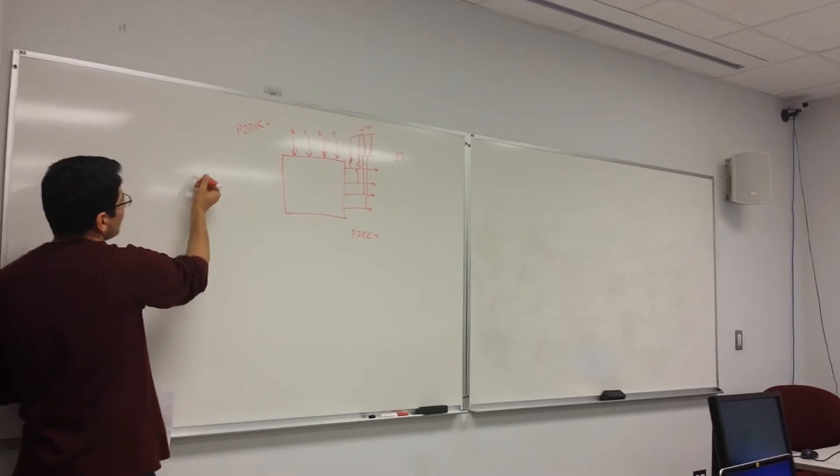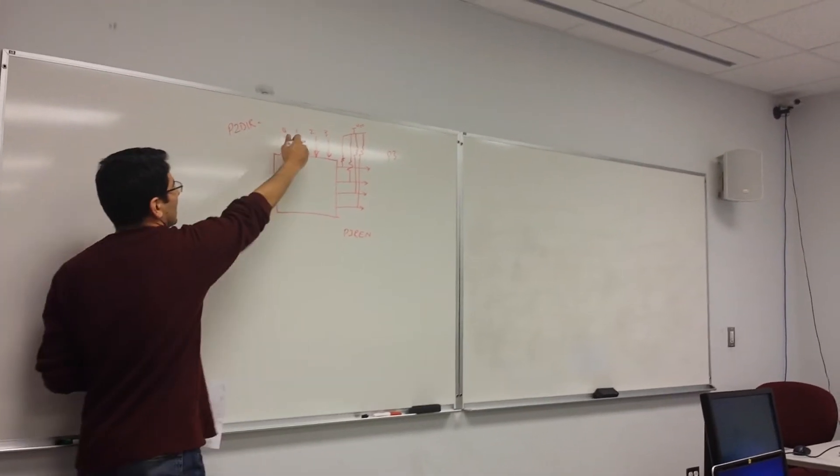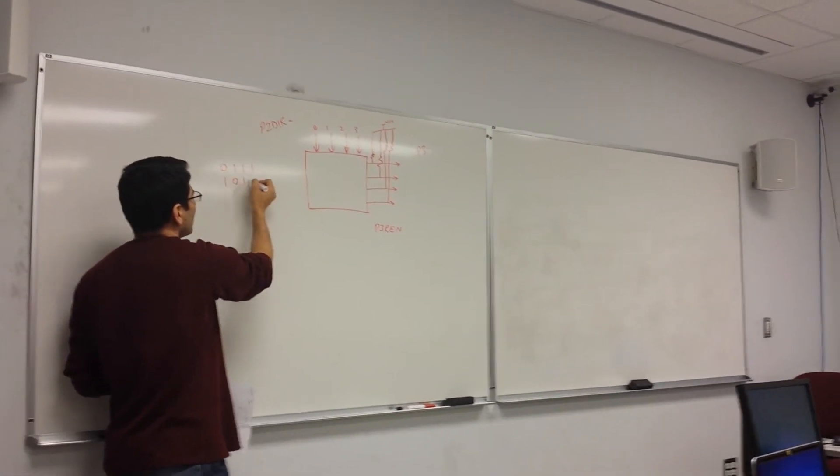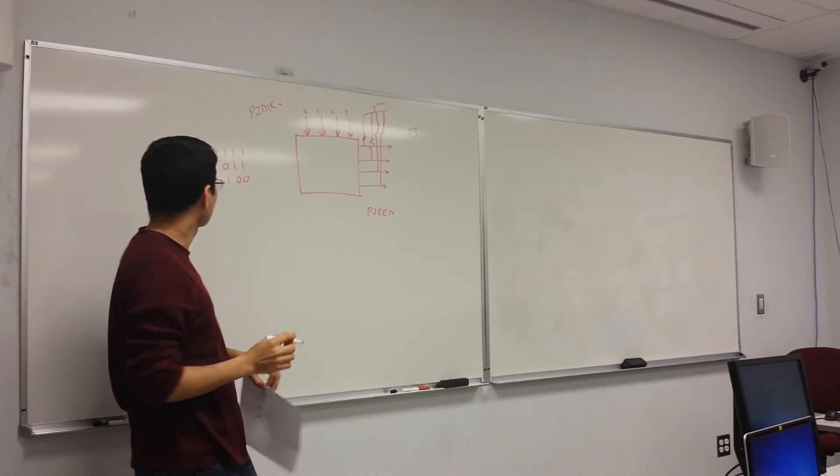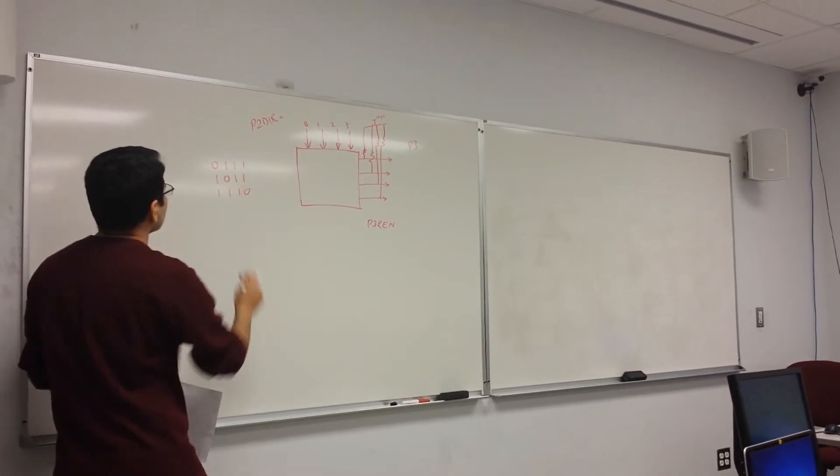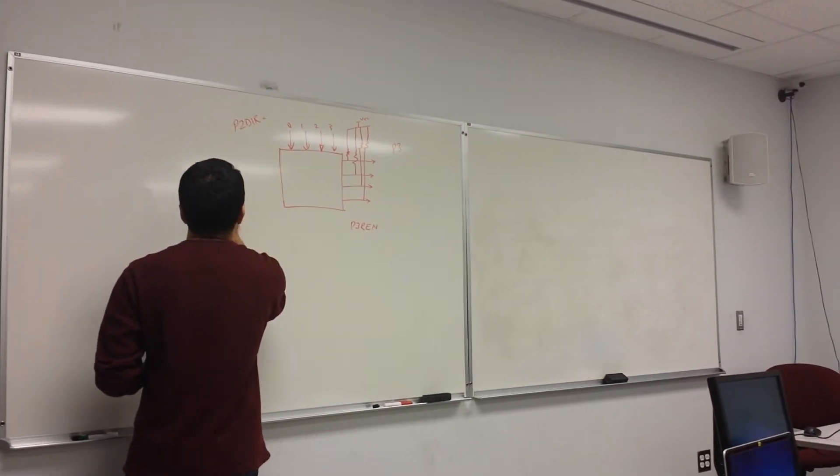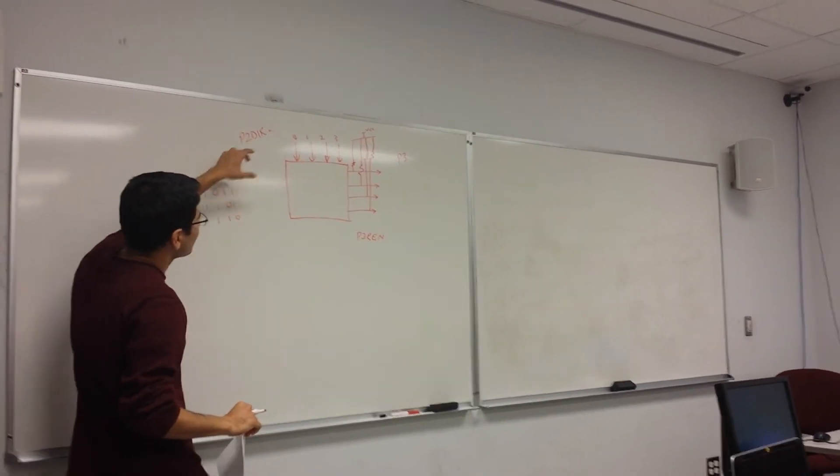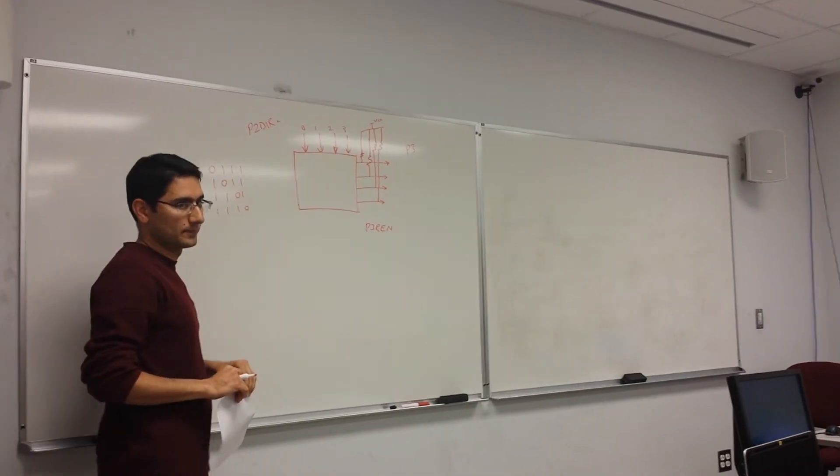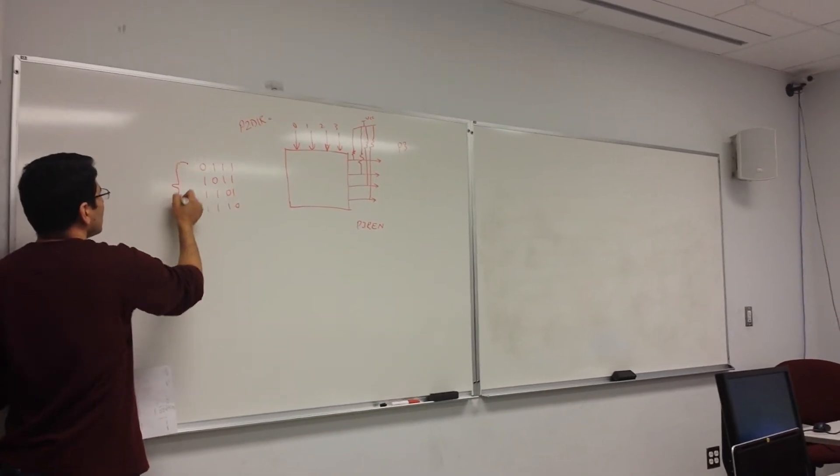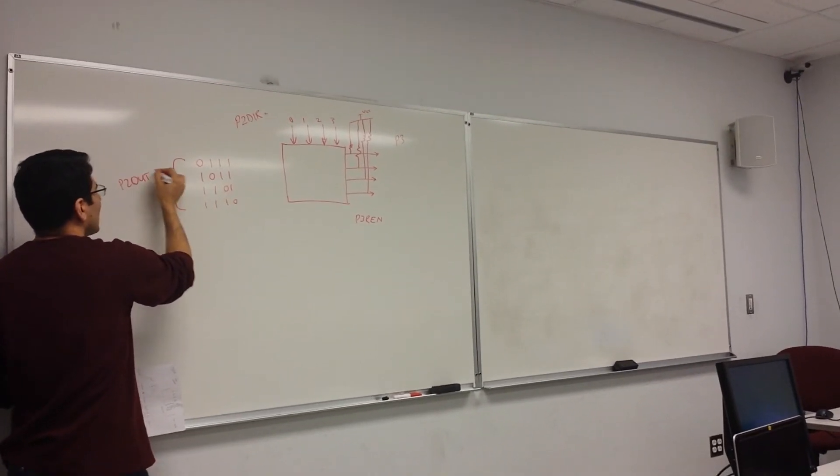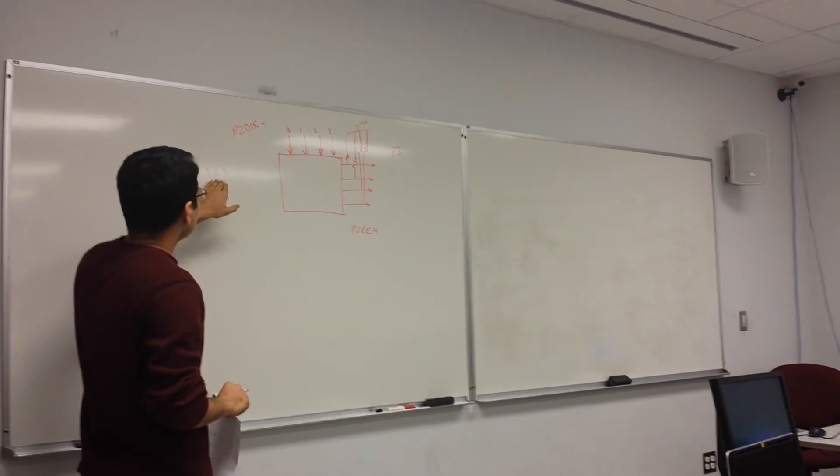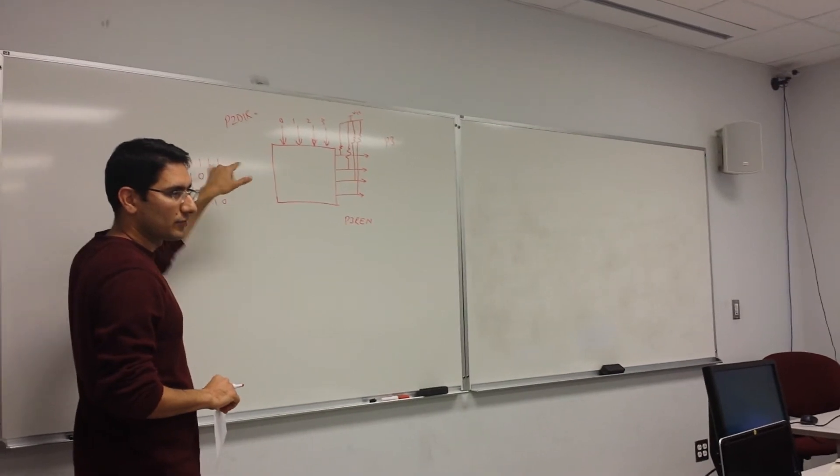So how to do the scanning? First of all, you will apply a vector to these 4 pins. It could be like this: 0, 1, 1, 1, then 1, 0, 1, 1, then 1, 1, 0, 1. Should be 0, 1, 1, 1. So you will apply the first vector to here as the P2 out. So it means it has to go to P2 out. And we are using only 4 pins, which means it should go to the LSB 4 bits.